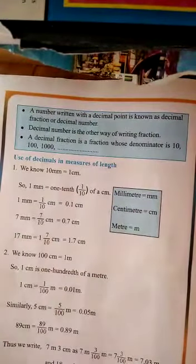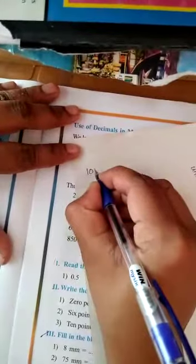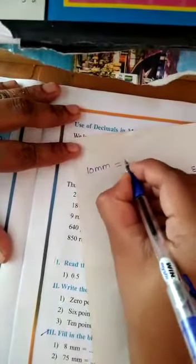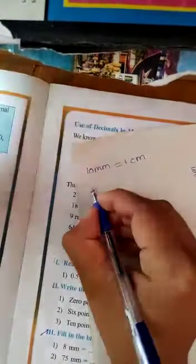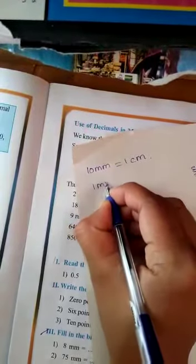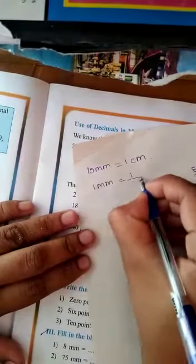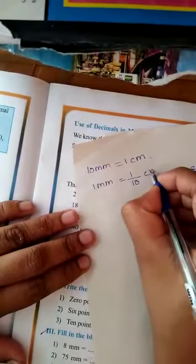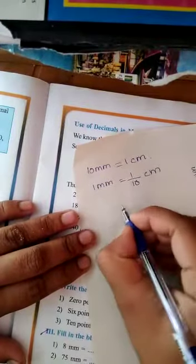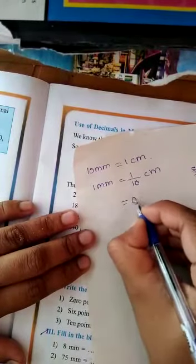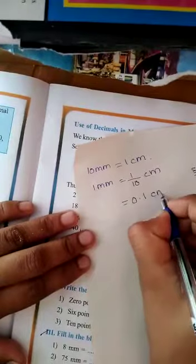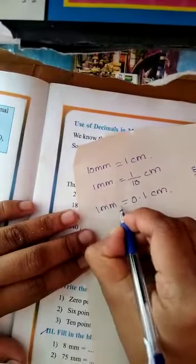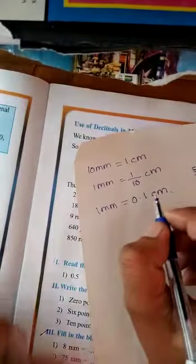Now, use of decimals in measures of length. We know that 10 mm is equal to 1 cm. Then what is 1 mm? 1 mm is 1/10 cm, that is 1 tenth, its decimal form is 0.1 cm. So 1 mm equals 0.1 cm.